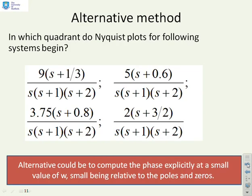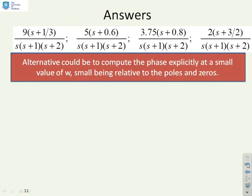Next we're going to look at an alternative, a different sort of method which you might prefer in some cases. The alternative method is summarized at the bottom. What we're going to do is compute the phase explicitly, but the key thing is at a small value of omega. What we mean by small is relative to the other poles and zeros. We're simply going to calculate the phase using the full phase argument. We'll start with this example here: 9 times (s+1/3)/(s)(s+1)(s+2). First I need to write out the phase explicitly and then substitute in a small omega.